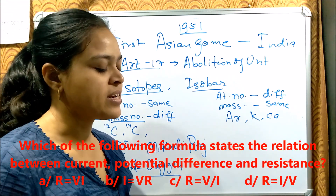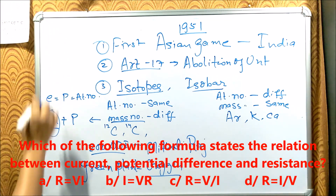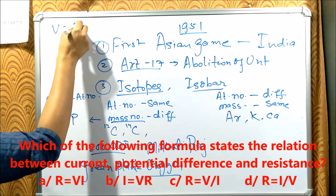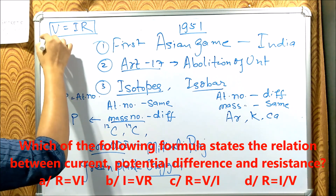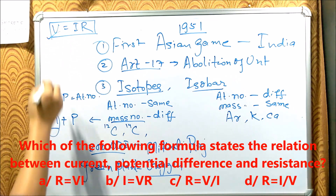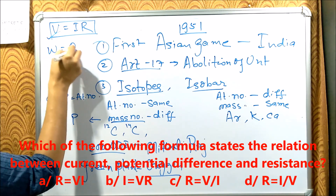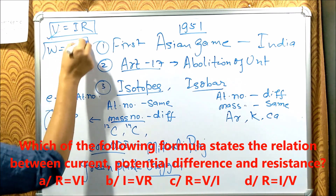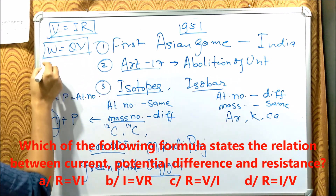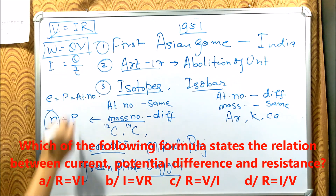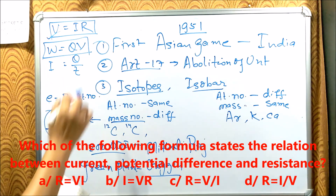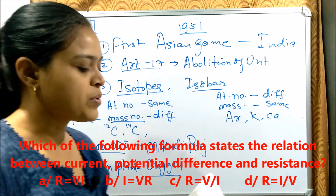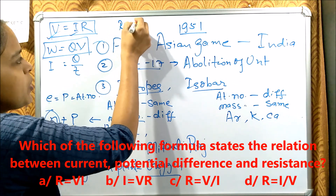Next question: Which formula states the relation between current and potential difference? V = IR — this is Ohm's Law. Also remember: W = QV, and current equals charge per unit time. These are formulas from the current electricity chapter in Class 10. The correct option here is V = IR, and equivalently R = V/I, which is option C.